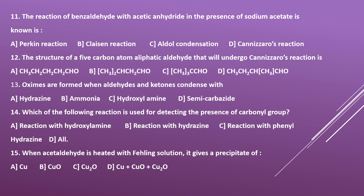Fifteenth question: when acetaldehyde is heated with Fehling's solution, it gives a precipitate of — options: A) Cu, B) CuO, C) Cu2O, D) Cu+CuO+Cu2O. When acetaldehyde is treated with Fehling's solution, we get a red precipitate of cuprous oxide — Cu2+ is reduced to Cu+. So the right answer is C, Cu2O.